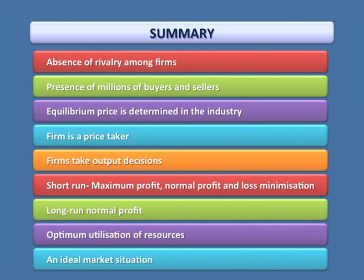Summary: Perfect competition implies the absence of rivalry among business firms. Under perfect competition, there exist millions of buyers and sellers and the equilibrium price is determined by the industry. The firm is a price taker; firms take output decisions. In the short run, firms can maximize profit, earn normal profit, or sometimes minimize loss depending on conditions. In the long run, only normal profit is possible, and all business firms operate at the optimum level. Therefore, perfect competition is an ideal market structure.